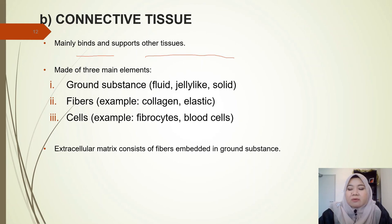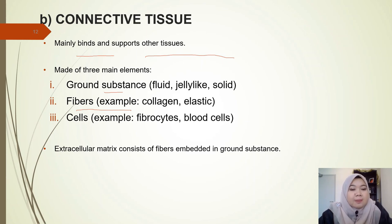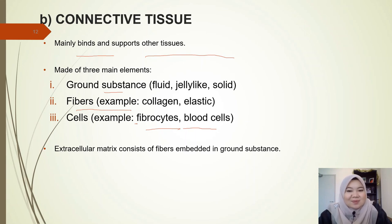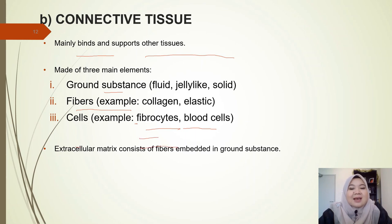Connective tissues are made of three main elements: a ground substance that can be fluid, jelly-like, or solid; fibers such as collagen fibers that provide strength and flexibility, and elastic fibers that provide elasticity; and cells such as fibrocytes and blood cells. The extracellular matrix consists of collagen fibers embedded in the ground substance.